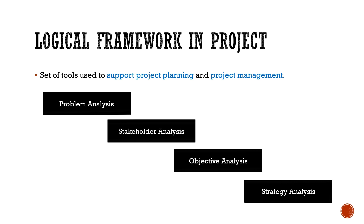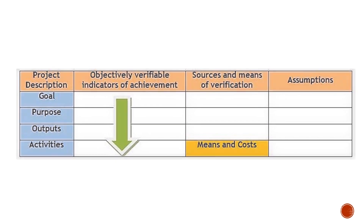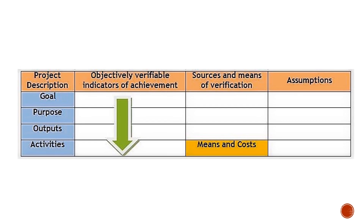This is a logical framework that reflects the overall project. We can see the logical framework as a simple template with only 4 rows and 4 columns. In the 4 columns, we have: first, project description; second, objectively verifiable indicators of achievement, or simply indicators; third, sources and means of verification; and fourth, assumptions and possible risks. In the first column's rows, we have goals, purpose, output, and activities.